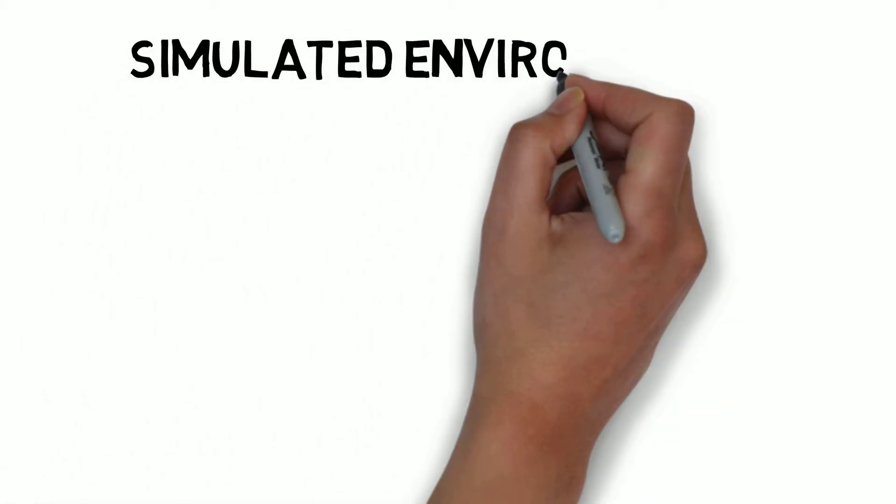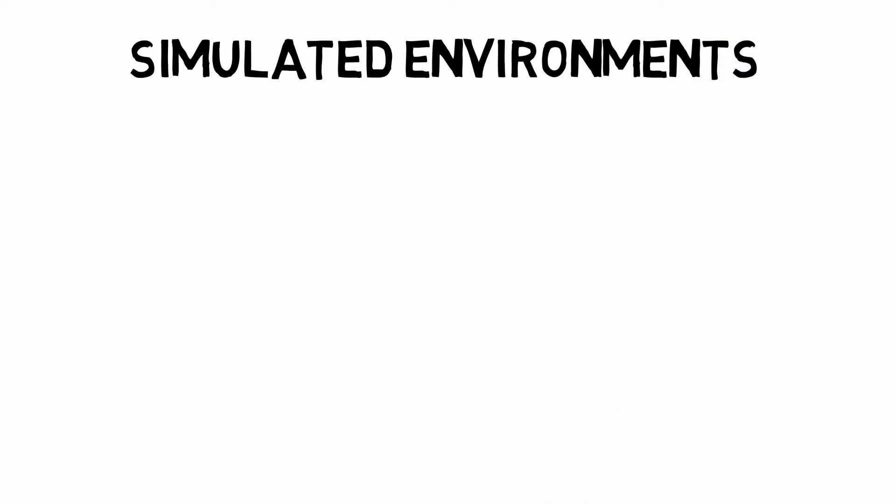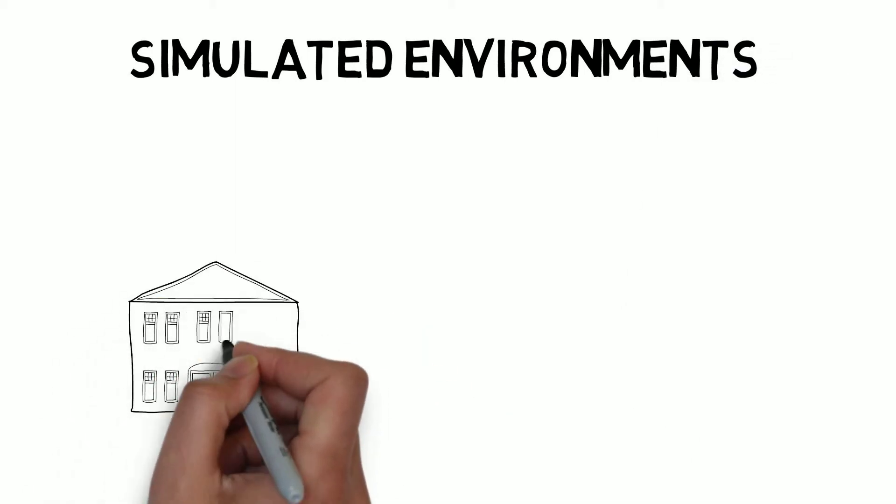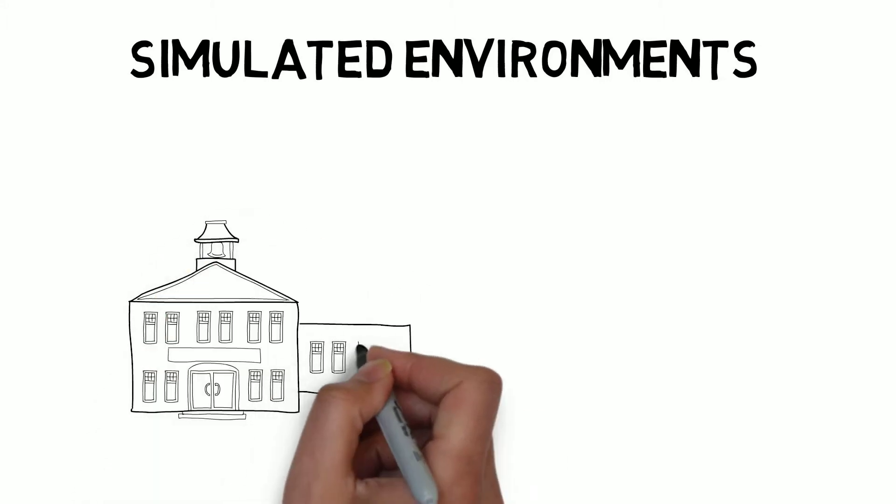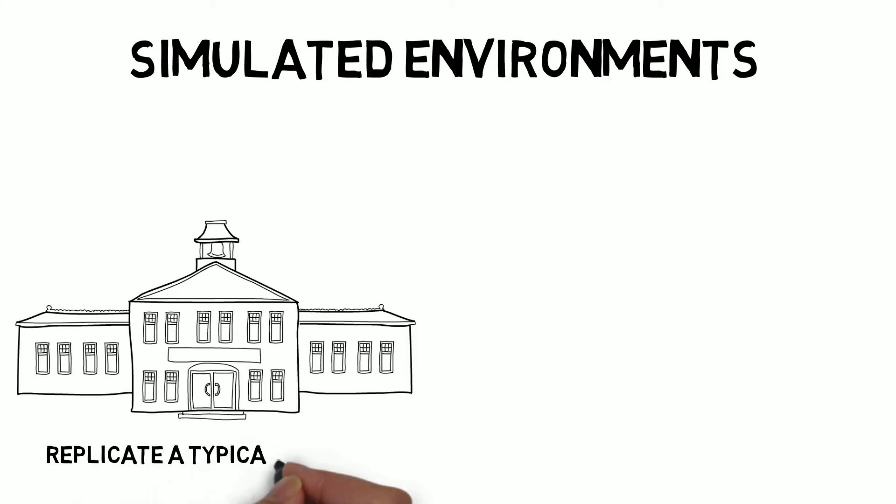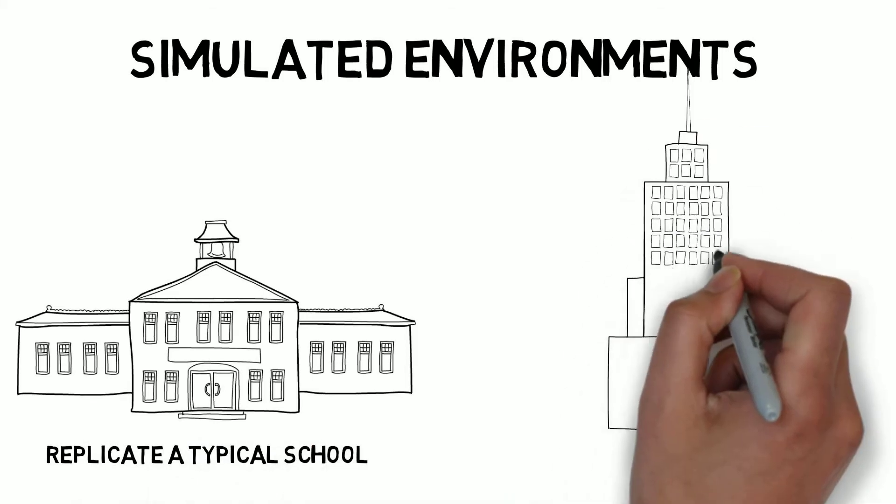To address this struggle, a few architects create schools that simulate real-world environments. Some simply mimic the features of mainstream schools so the transition is not as stark as may be the case at a sensory subdued school. Others try to create environments that are samplings of the wider community.